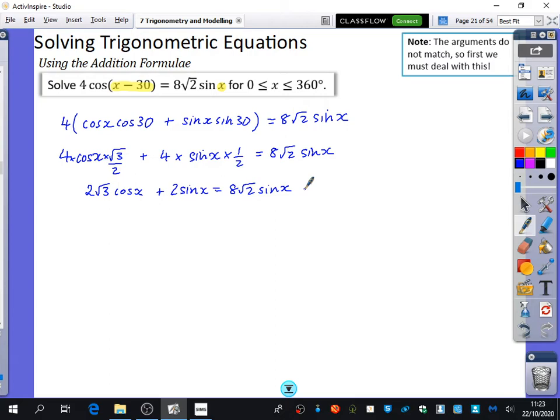But before I go about solving, I probably want to do a couple of things first. Any suggestions? Put the sine on one side. Good. Put the sine all onto one side. So I get 2√3 cos x = 8√2 - 2 sin x. I've just moved the minus 2 sin x over, and I've also factorized it straight away.